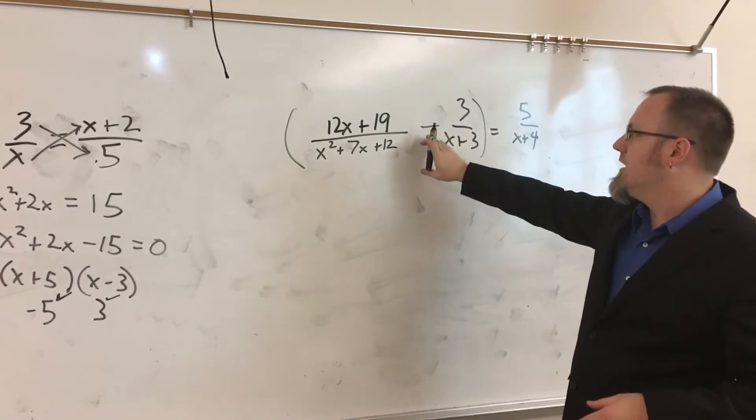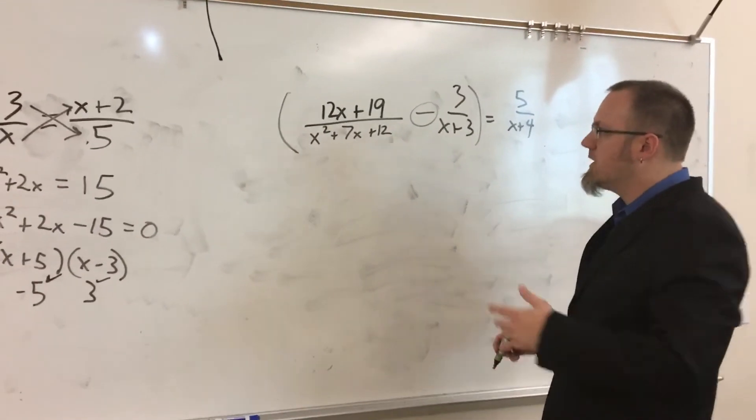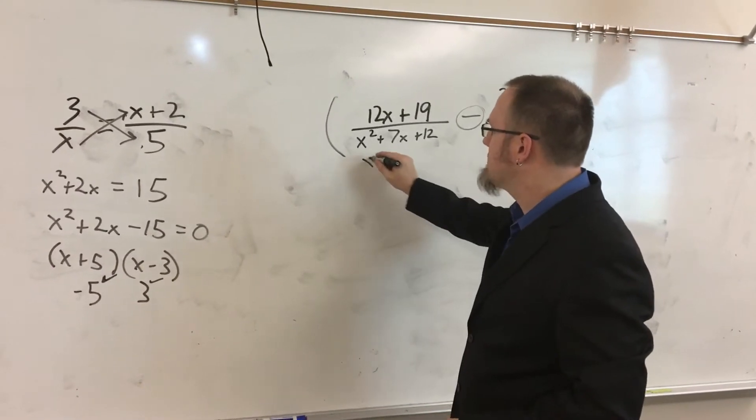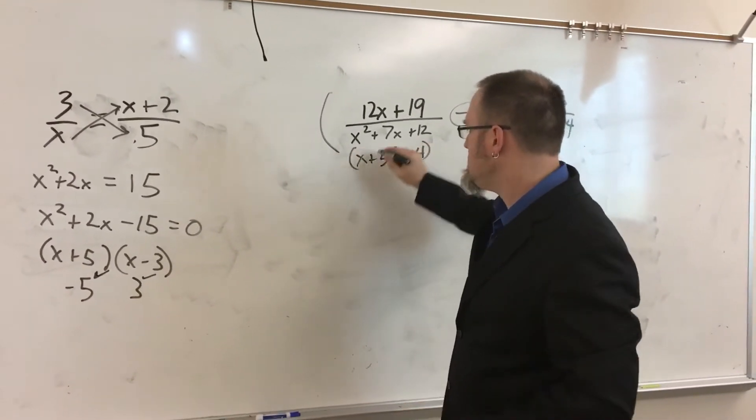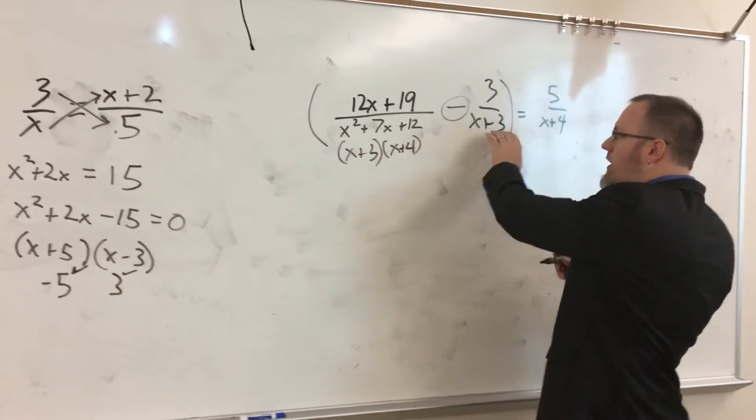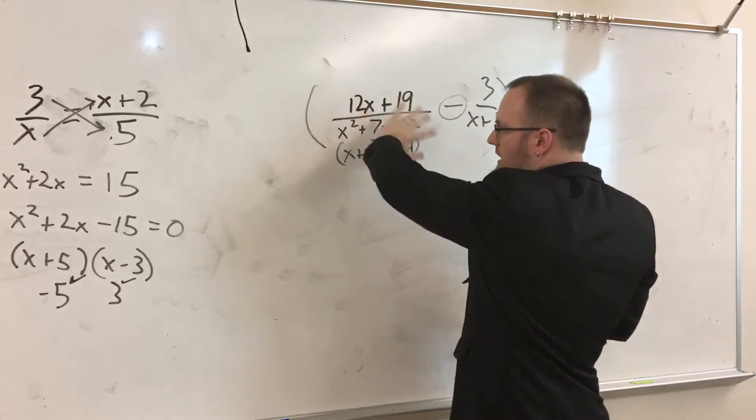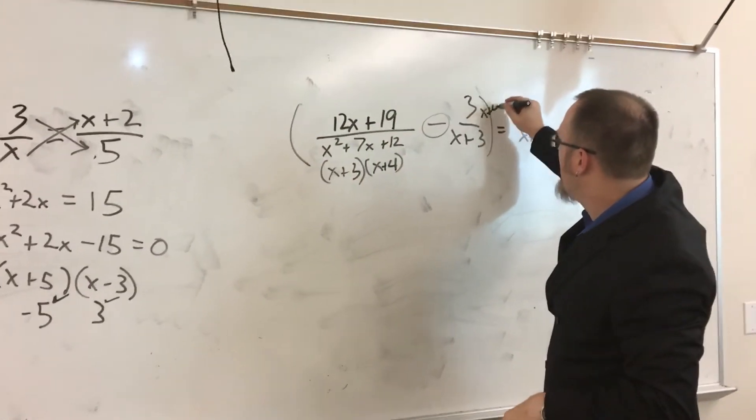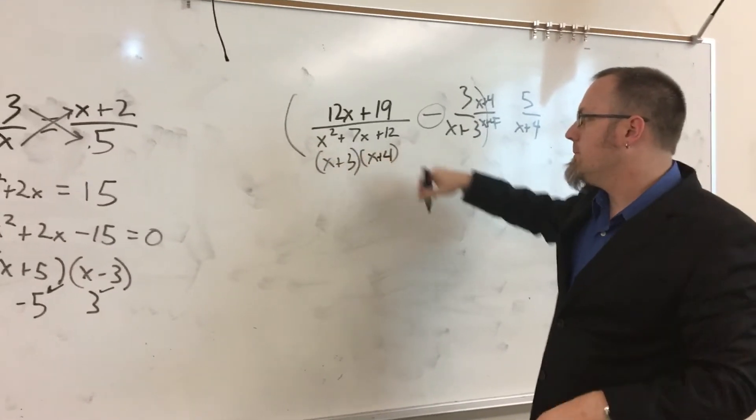We're not going to start by cross-multiplying, even though we have this. We're going to isolate this side, and we're going to do what this operation tells us to do, which is subtract. Now, this x²+7x+12 will factor into (x+3) and (x+4). So if we look at it like that, we already have the x+3 over here.